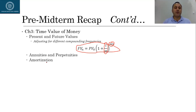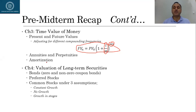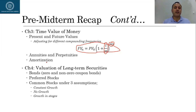As the last topic in chapter three we covered amortization, which is calculating the installments of a loan. In chapter number four we used those concepts from chapter three for valuation of long-term securities — mainly bonds, including zero coupon bonds and non-zero coupon bonds. Then we moved to preferred stocks, which is a hybrid security with features of both bonds (fixed income) and common stock. Valuation of bonds and preferred stocks is not that difficult because we know the cash flows in advance.